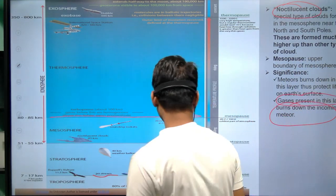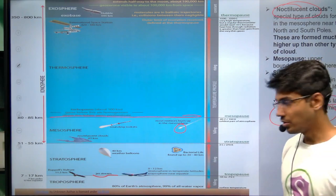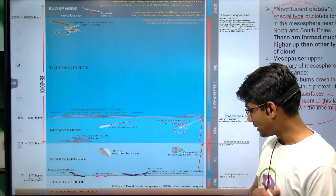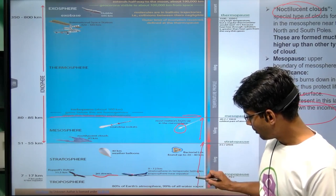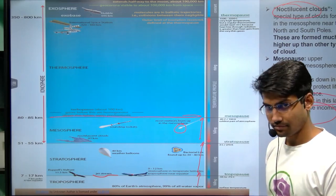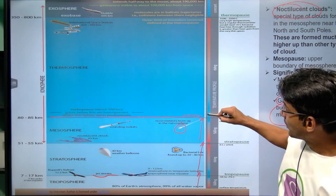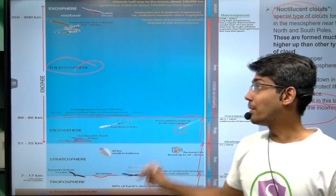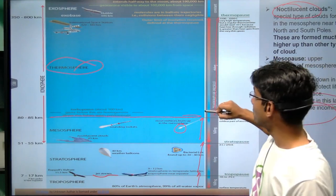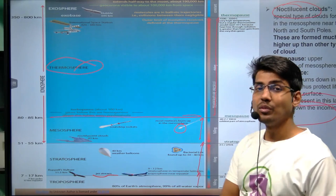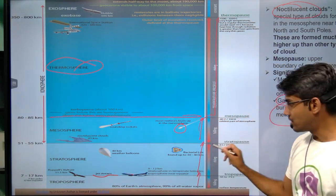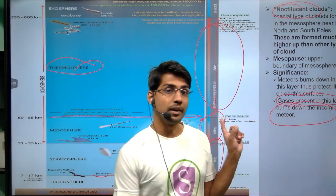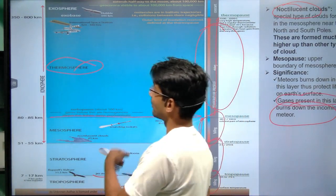Regarding temperature trends: in the troposphere, as you go up, temperature decreases. In the stratosphere, as you go up, temperature increases. In the mesosphere, as you go up, temperature decreases again. In the thermosphere, as you go up, temperature increases again. So you need to remember these alternating trends across the layers. The diagram will be shared with you on the application for easier reference.